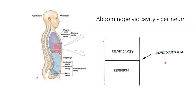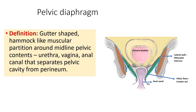The diaphragm separates the pelvic cavity from the perineum. The pelvic diaphragm is defined as a gutter-shaped, hammock-like muscular partition around the midline pelvic contents — that is, the urethra, vagina, and anal canal — and this pelvic diaphragm separates the pelvic cavity from the perineum.